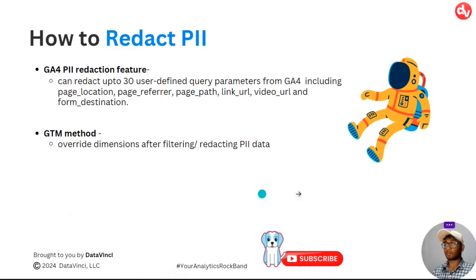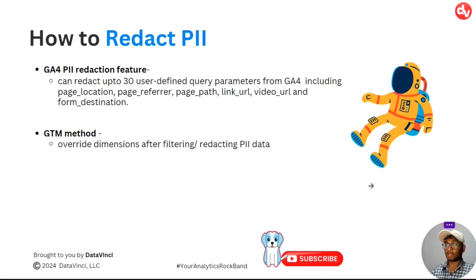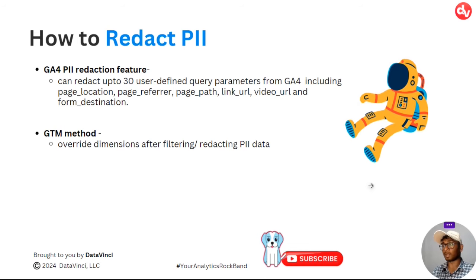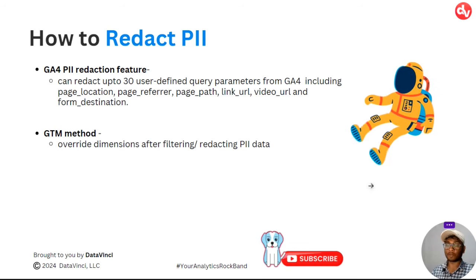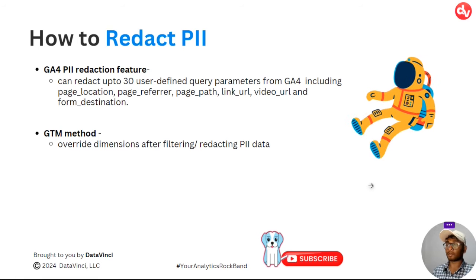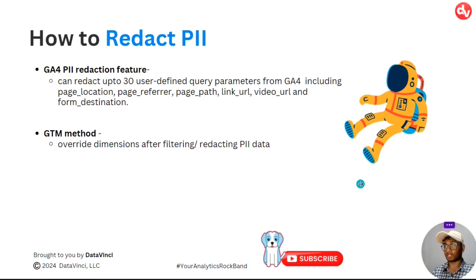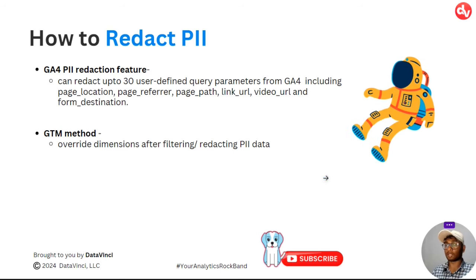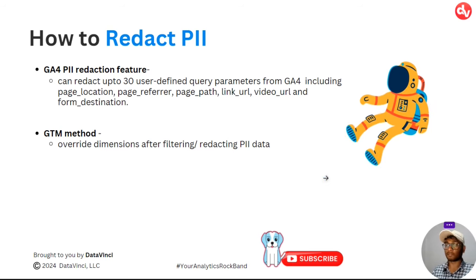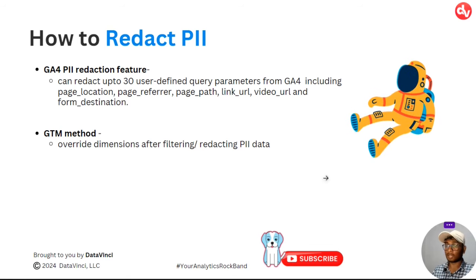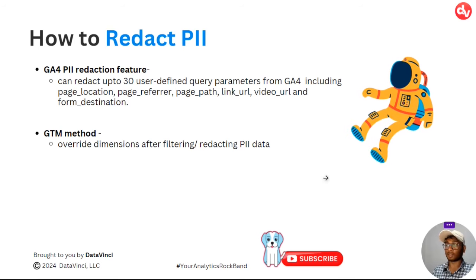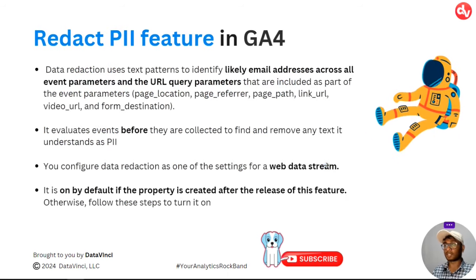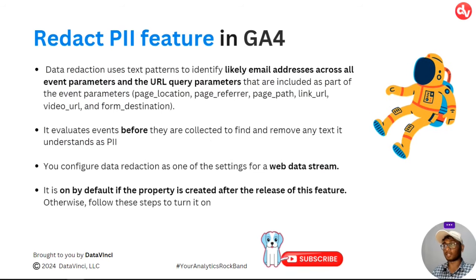Now that we've learned how to search for PII data in our GA4 properties, let's learn how to redact it. There are two ways. The first is the GA4 PII redaction feature, which is the safer and recommended way — it can redact up to 30 user-defined query parameters from GA4, including page location, page referrer, page path, link URL, video URL, and form destination. The second is the GTM method, which is the older approach used before GA4 released its built-in PII redaction feature, involving overriding dimensions with sanitized versions.